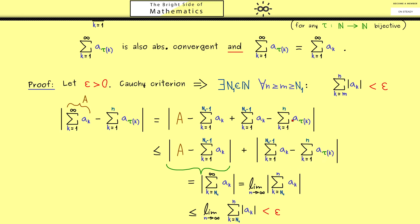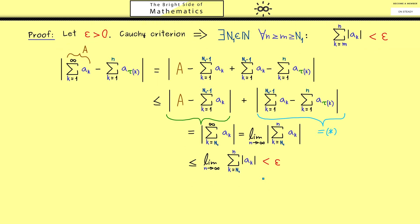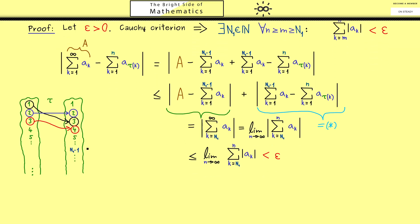However, for the second term we have to work a little because tau is involved. Let's call this part star. In order to deal with this, we have to define a suitable capital N. The picture for tau might help again.